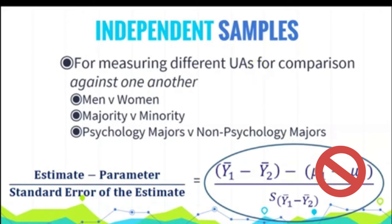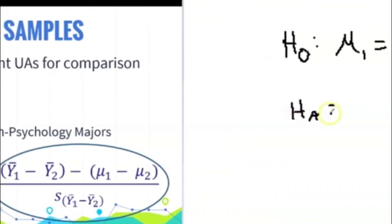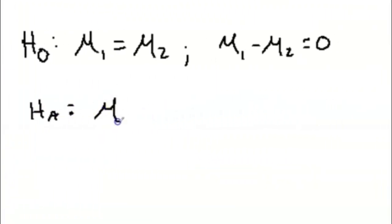The alternate hypothesis is that these groups are not equal, and you can have a directional one that says how they differ specifically. But under the null, it's going to be 0. So our test is going to simply result to be the difference between our two sample means. That's the only term we're going to need over the standard error for this mean difference.